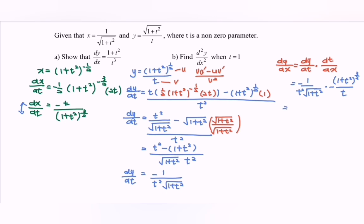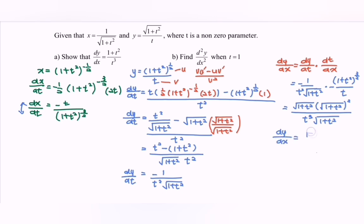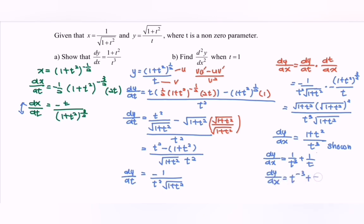Simplifying: we have a positive result, with the square root of (1 plus t squared) multiplied by the square root of (1 plus t squared) squared, over t cubed multiplied by (1 plus t squared). This simplifies so that dy/dx is equal to (1 plus t squared) over t cubed, which can also be expressed as 1 over t cubed plus 1 over t, or equivalently t to the power of negative 3 plus t to the power of negative 1.